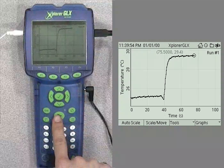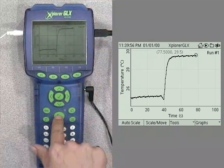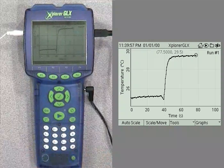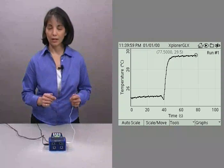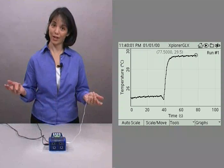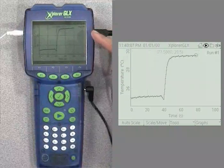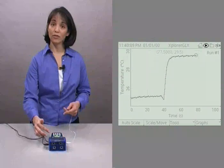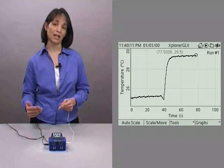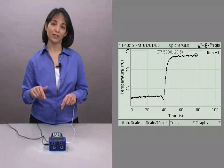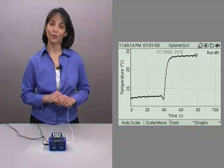Let's go ahead and push the start stop button again to end data collection. You have just collected your first run of data. Notice on the top bar that our clock has changed back to a picture of the start stop button indicating that the Explorer GLX is now ready for you to collect another run of data.